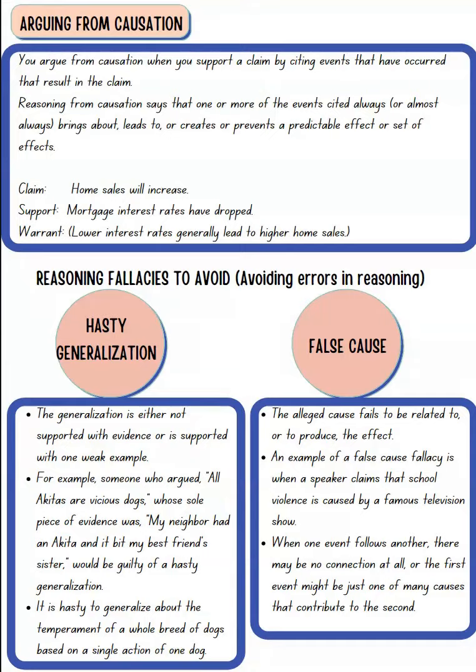Arguing from causes uses causes as your support. For example, your claim is that home sales will increase. Your support identifies the causes behind why home sales have increased. Your warrant then shows that because of these causes, it supports the claim that home sales will increase.